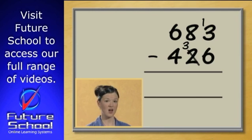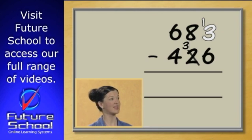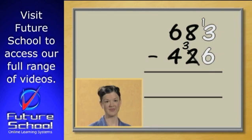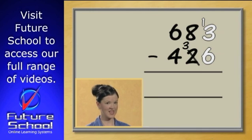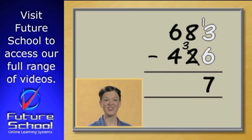So, in the units column, we now have 13 take away 6. Are you thinking about the answer? That's right, it's 7. Put the 7 in the units column.